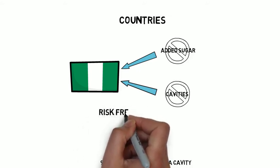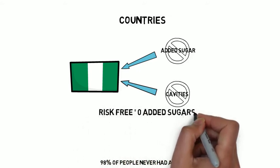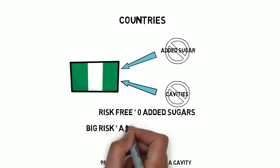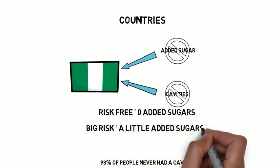The researchers found that your risk for cavities starts at 0% when you eat zero added sugars, but as soon as you add even a little sugar to your diet, this risk percentage shoots up exponentially.